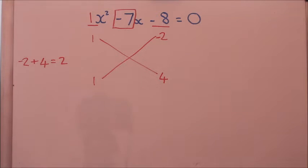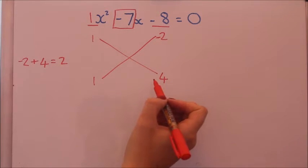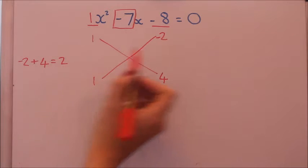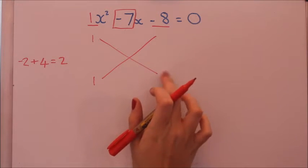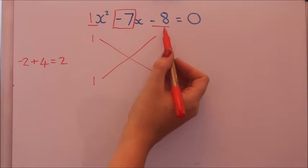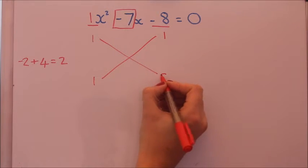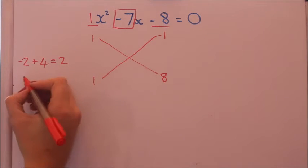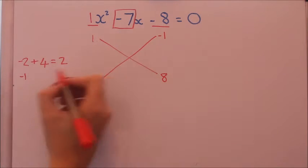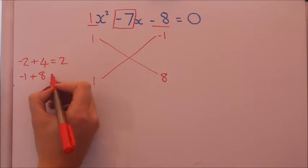Because the number's wrong as well, I'm actually going to change the numbers here. So two different numbers that multiply to give eight would be one and eight. I'll try minus one. Minus one times one is minus one, one times eight is eight. Add them together and you get seven.